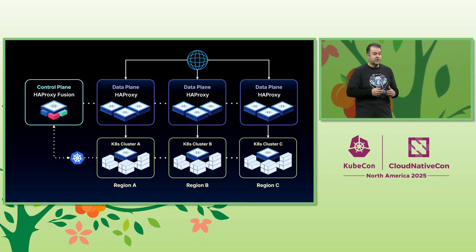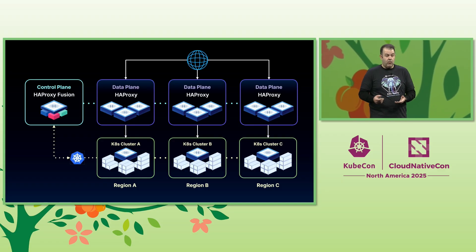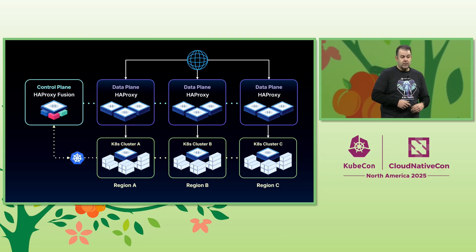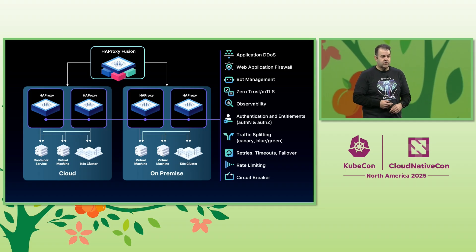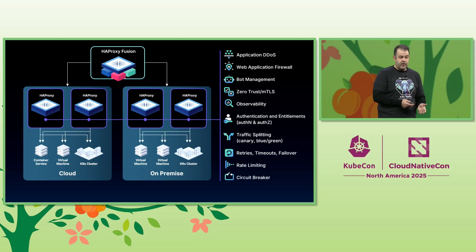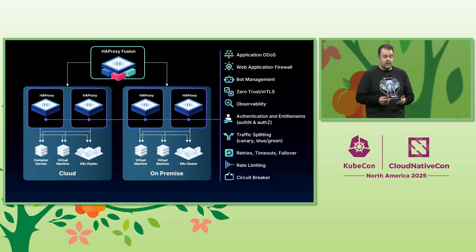The pillars of any service mesh are the control plane and the data plane. Our control plane, HAProxy Fusion, communicates with APIs across multiple clusters. Then our data plane relies on HAProxy, which is known for its legendary performance and reliability. This architecture enables both North-South and East-West communication for omnidirectional support across Kubernetes clusters, multiple clouds, container services, and on-premise. We're basically infrastructure agnostic. It relies on HAProxy's rich feature set to deliver core service mesh capabilities for even the most complicated workflows, as you can see on the right of the slide.